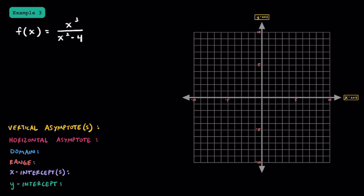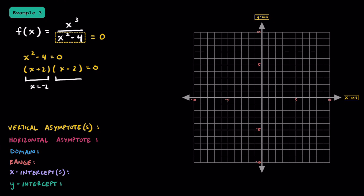For example 3, let's look at the function f(x) = x cubed over x squared minus 4. Let's start with the vertical asymptote and see when the denominator equals 0. You can either use square roots or factor it as a difference of squares. This factors into (x plus 2)(x minus 2). So if x equals negative 2 or x equals positive 2, the denominator equals 0. The two values that x isn't allowed to equal are negative 2 and positive 2, giving us two vertical asymptotes at x equals negative 2 and x equals positive 2.